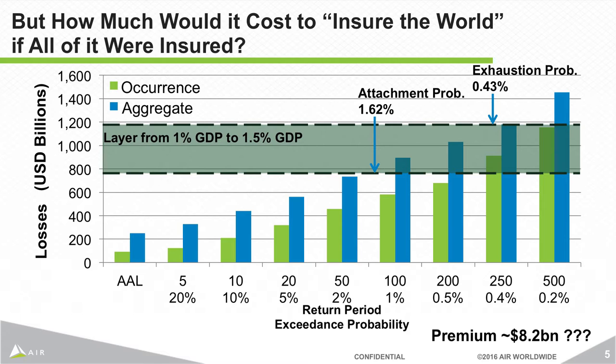In this room we have the highest concentration of people who price cat treaties anywhere in the world today. I'd like to ask everybody who prices cat treaties to try to see how you would price this layer. Our tentative calculations suggest an annual premium of around 8 billion dollars. The size of the layer is about 400 billion, so if this were possible, it would literally double the cat capacity currently in the world. It is definitely possible to grow the pie and insure the world.